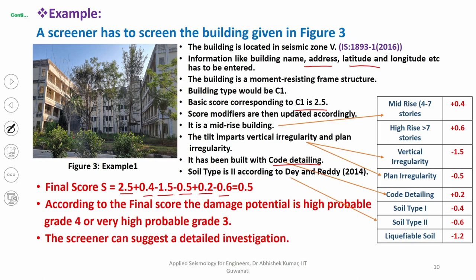Referring to the damage potential chart, S = 0.5 means the building has high probability of grade 4 damage or very high probability of grade 3 damage. That is the damage potential, determined just by looking at specific details of the building. The screener can suggest a detailed investigation before proceeding with risk assessment.